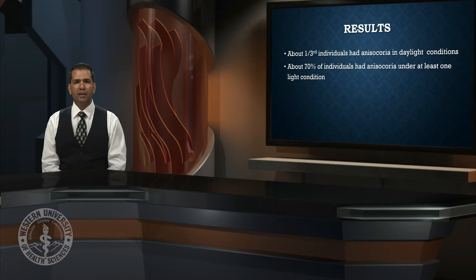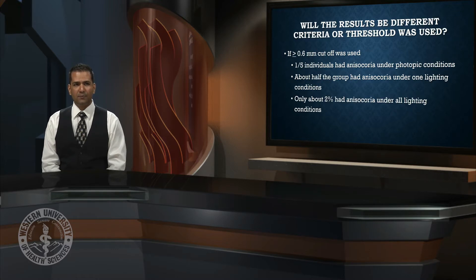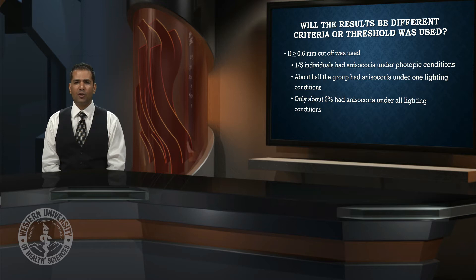What we found was very interesting: one-third of the individuals showed anisocoria under daylight conditions, and about 70% of the subjects showed anisocoria under at least one of the lighting conditions. Using a more stringent cutoff of greater than or equal to 0.6 millimeter, we still found one-fifth of subjects showed anisocoria under photopic conditions, and about half the group under at least one lighting condition. However, if anisocoria was required to be present under all lighting conditions, only 2% of subjects had anisocoria.